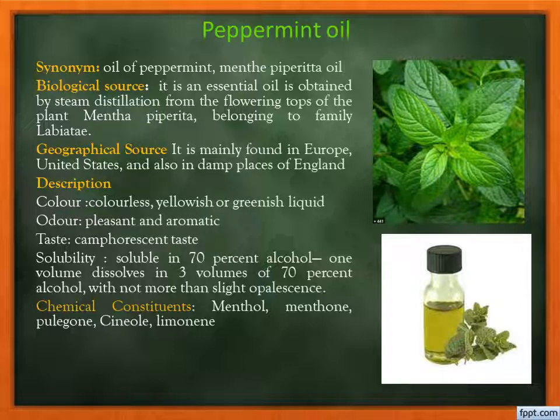It is also found in India. It is a colorless, yellowish, or greenish liquid with a pleasant and aromatic odor, camphoraceous taste, and it is soluble in 70% alcohol — one volume dissolving in 3 volumes of 70% alcohol with not more than slight opalescence.